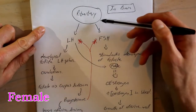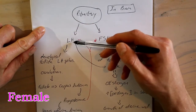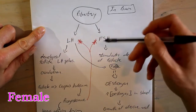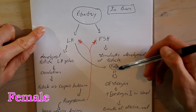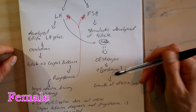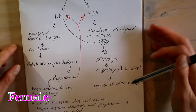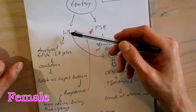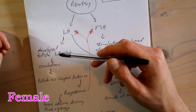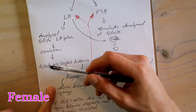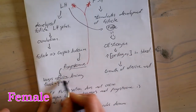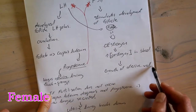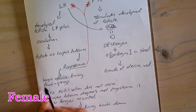Now let's look at the hormones that play a role in the menstrual cycle. The pituitary gland in the brain secretes both luteinizing hormone (LH) and follicle stimulating hormone (FSH). FSH stimulates the development of the follicles, which then start secreting estrogen, leading to increased estrogen concentration in the blood and the growth and development of the uterine wall. LH spikes when the follicle is fully developed, leading to ovulation. The follicle then becomes the corpus luteum, which secretes progesterone to keep the uterine lining thick and spongy.